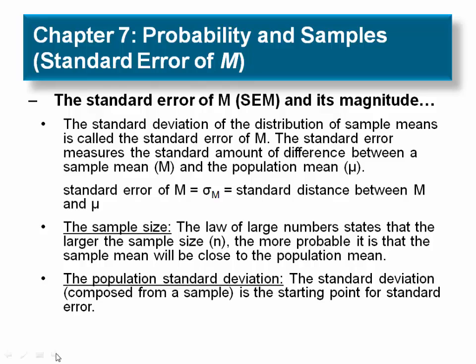The formula we use to quantify that sampling error is called the standard error of M, or SEM, and it tells us how much error to expect between a population mean and a sample mean.